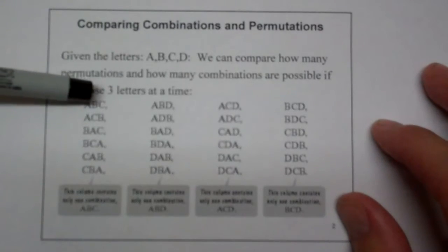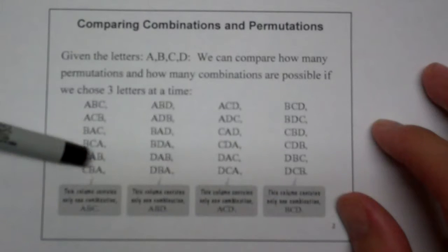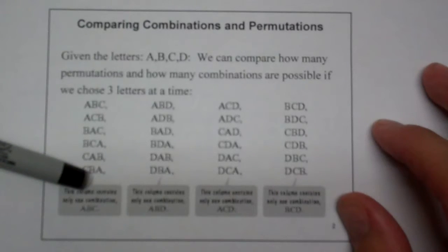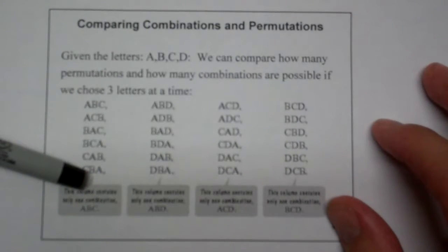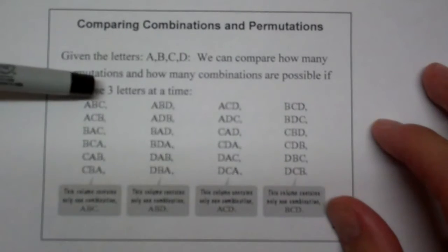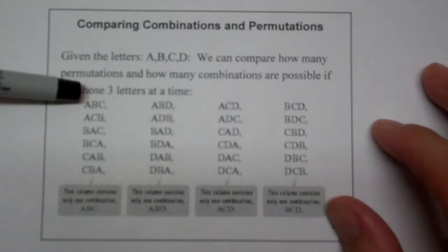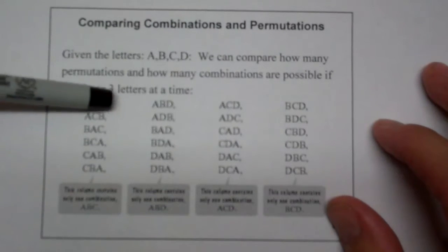If this first row means something like president, or first place, or highest, or something like that, and the second row means something else, then this makes sense — those different orderings each mean something different.